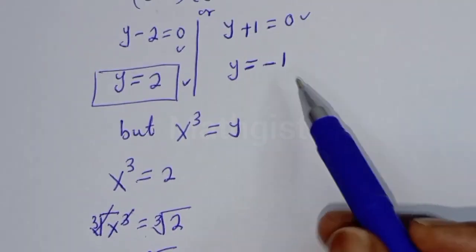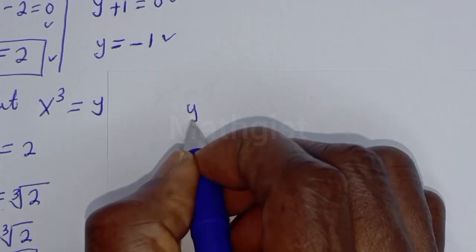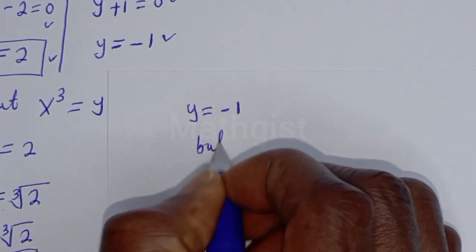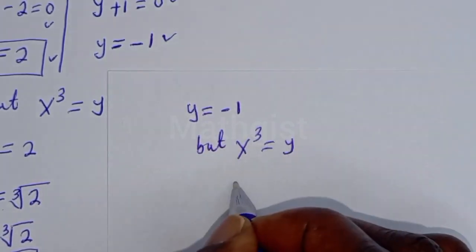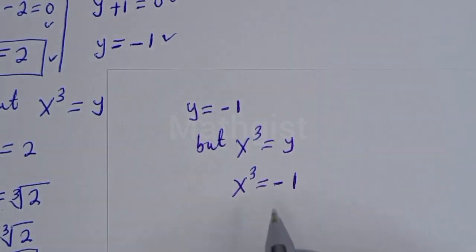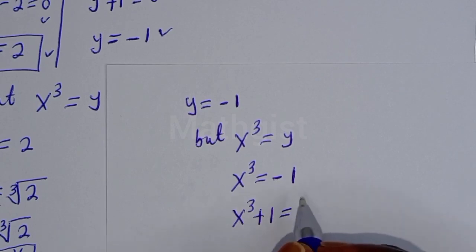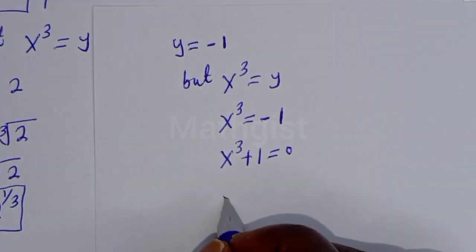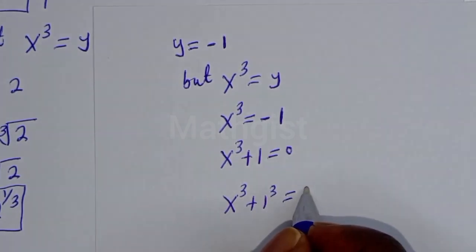From the second case, when y is equal to minus 1, since s raised to power 3 is equal to y, we have s raised to power 3 is equal to minus 1. Then s raised to power 3 plus 1 is equal to 0. This is the same as s raised to power 3 plus 1 raised to power 3 is equal to 0.